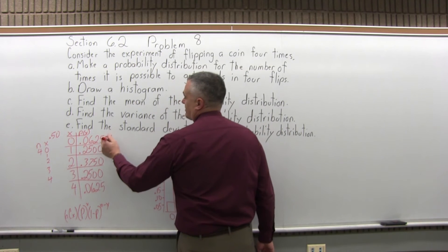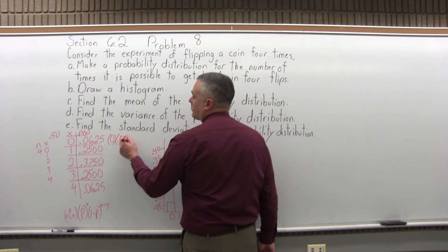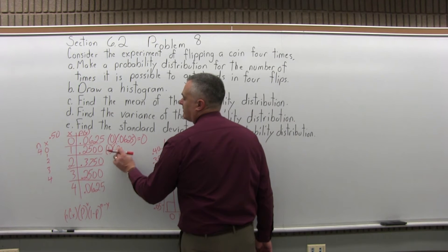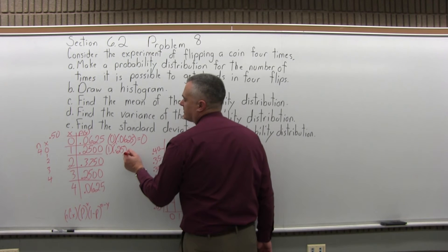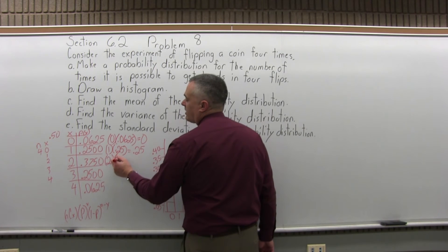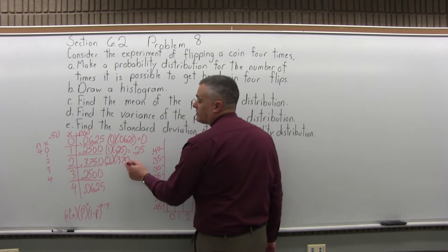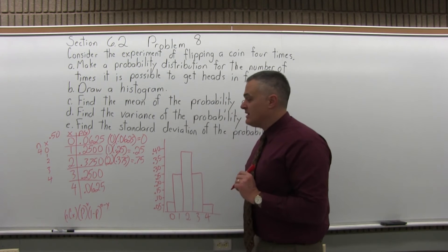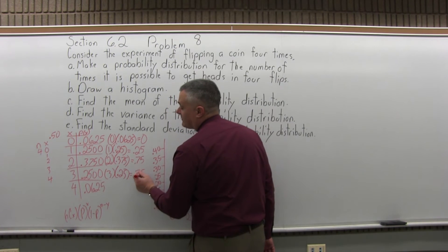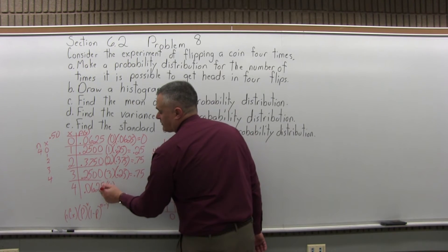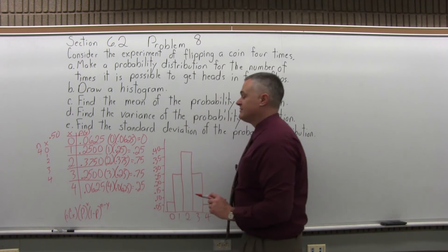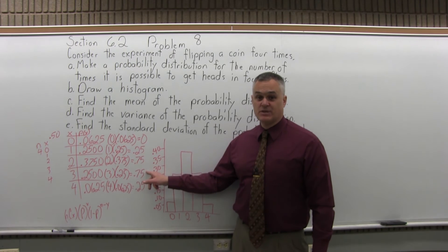So the top row: 0 times 0.0625, which is 0. Next row: 1 times 0.2500, which is 0.25. Next row: 2 times 0.375 — 2 times 0.375 is 0.75. Then 3 times 0.2500, or really just 3 times 0.25, which is 0.75 again. And in the bottom row, 4 times 0.0625 comes out to 0.25. And now I have 0 plus 0.25 plus 0.75 plus 0.75 plus 0.25.